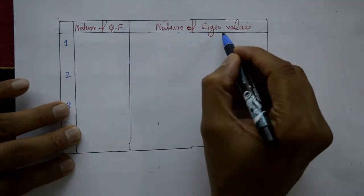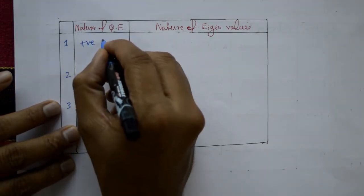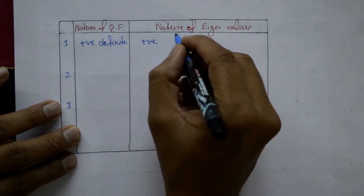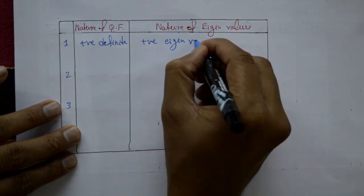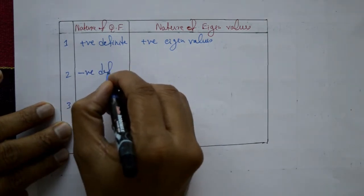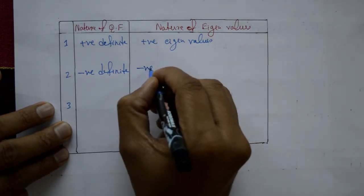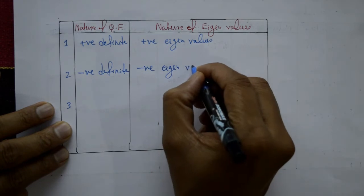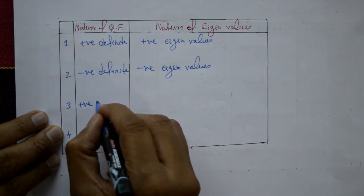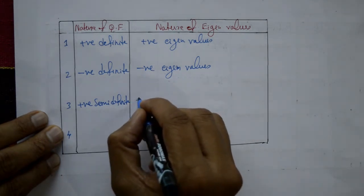Now let's look at the nature of quadratic forms and the nature of eigenvalues. The first one is positive definite — the nature of the eigenvalues is positive eigenvalues. The second one is negative definite — the nature of the eigenvalues is negative eigenvalues.